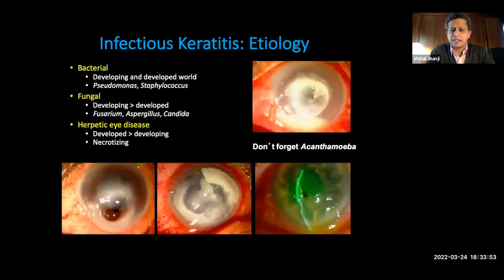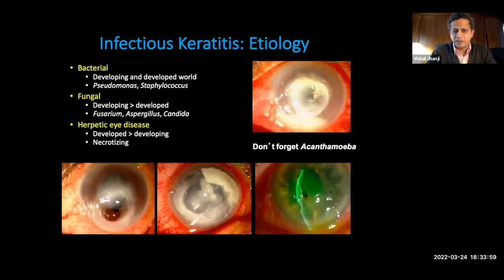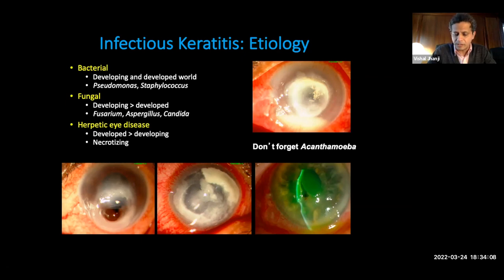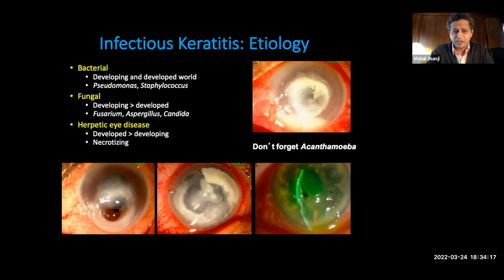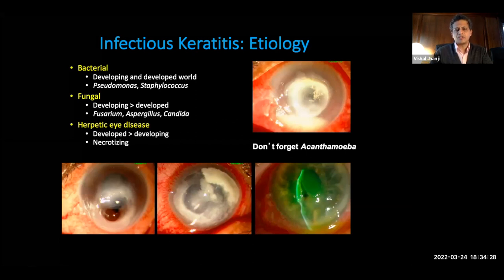In terms of infectious keratitis, there are clear differences between the developing and developed world. Bacterial infections are more commonly seen in the developing world. When you see a corneal perforation secondary to keratitis, you always think about pseudomonas. Even here in the United States, most contact lens keratitis cases are caused by pseudomonas. You can also have recalcitrant staph infections. In the developing world, you also see more fungal keratitis. Fusarium is particularly associated with corneal perforation. You can also have aspergillus. Perforation with candida takes some time — it's not as common as fusarium.